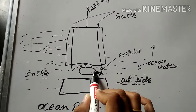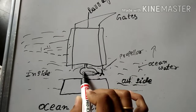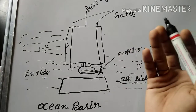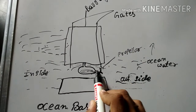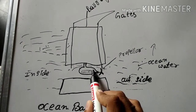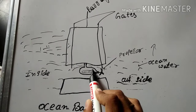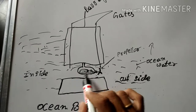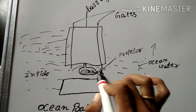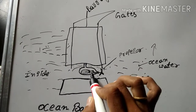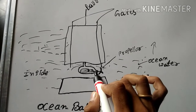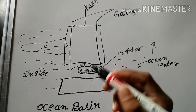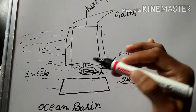The shaft of the propeller is connected to a generator, whose purpose is to generate electricity. The shaft of the propeller, which is the turbine, is coupled with a generator inside the turbine. Whenever the propeller rotates, the shaft of the propeller rotates, and at the same time the shaft of the generator also rotates, causing the production of electricity.